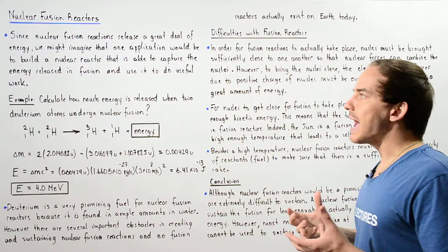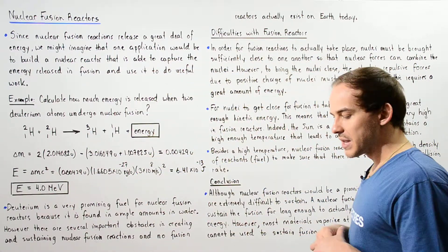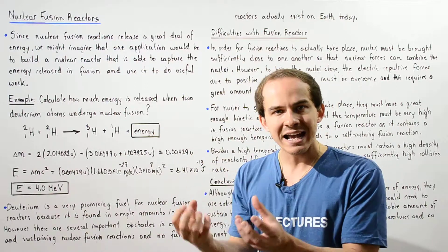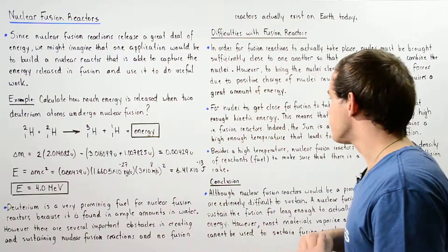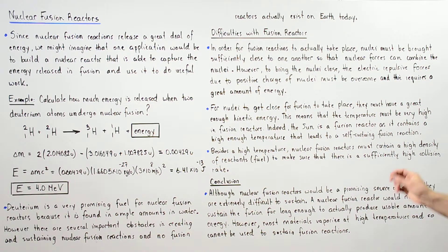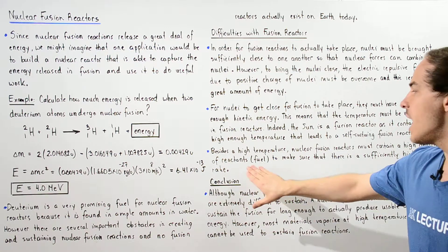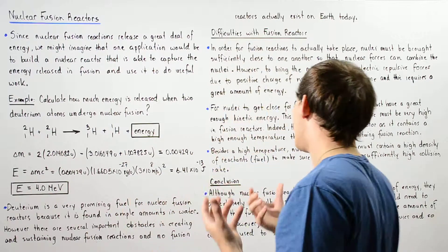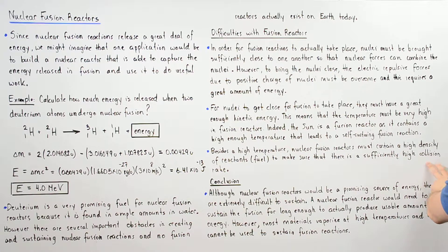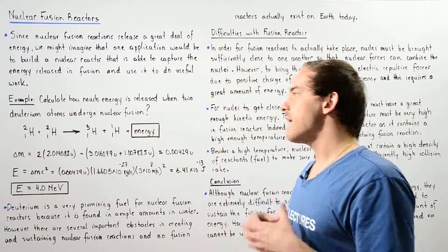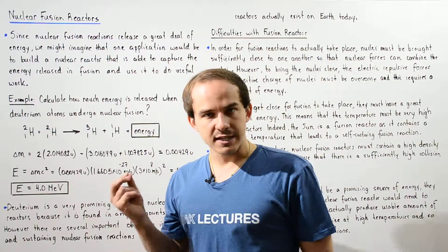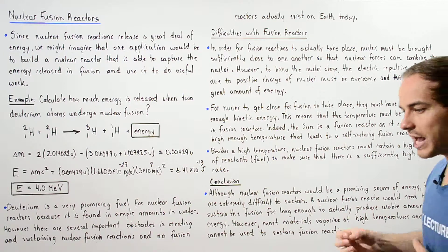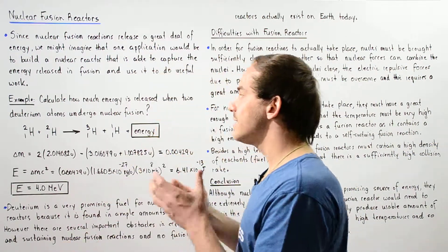The second difficulty is placing enough nuclei into the reactor for the collision rate to be high enough. Besides a high temperature, nuclear fusion reactors must contain a high density of reactants — a high density of fuel. In this case, the concentration of deuterium inside the reactor must be high enough to ensure a sufficiently high collision rate and a sufficiently high production of energy. So the two key difficulties are achieving the required high temperature and maintaining a very high density of fuel.